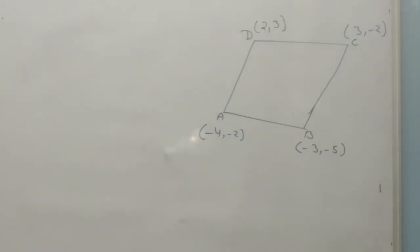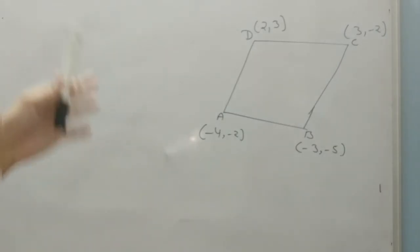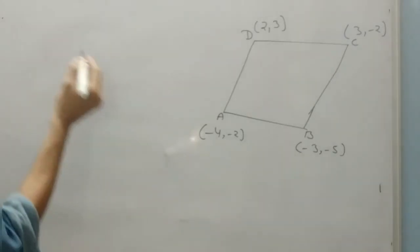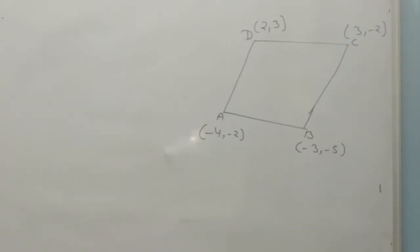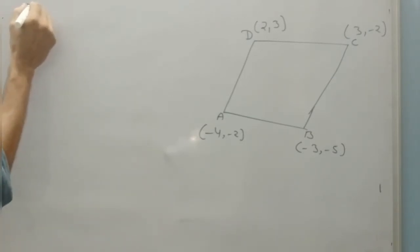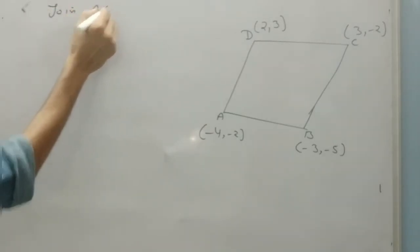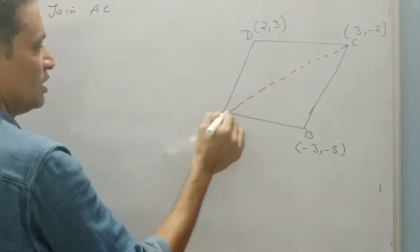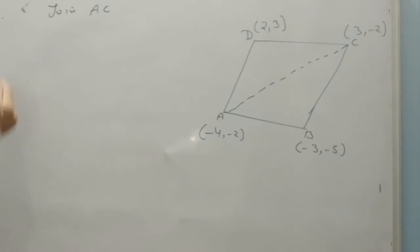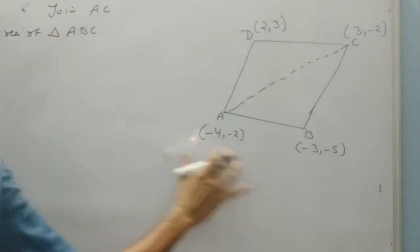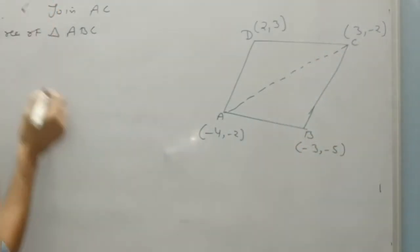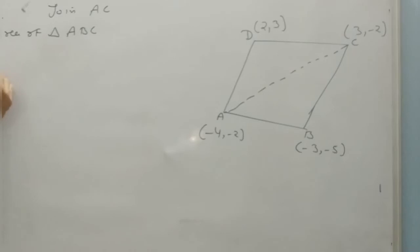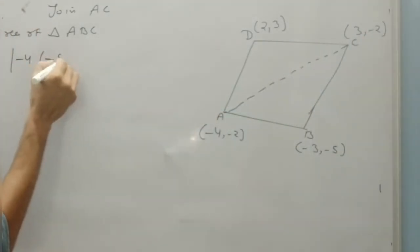Now question number 4: find the area of quadrilateral whose vertices are given in order. For finding the area, we don't have a direct formula for the area of a quadrilateral. So we just join diagonal AC, creating two triangles ABC and ADC.